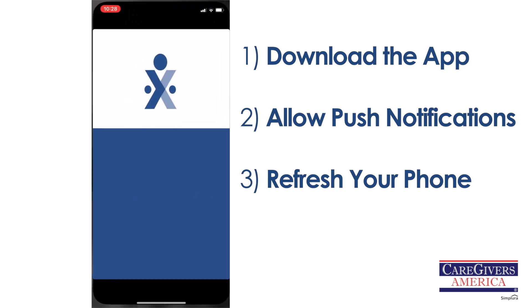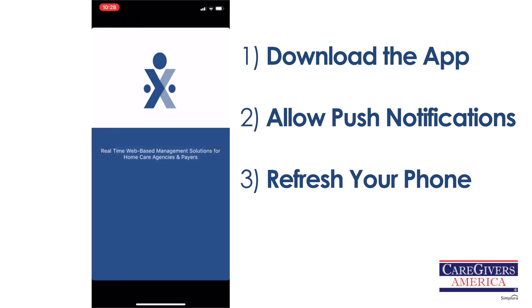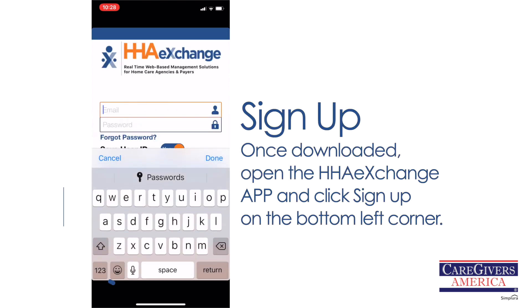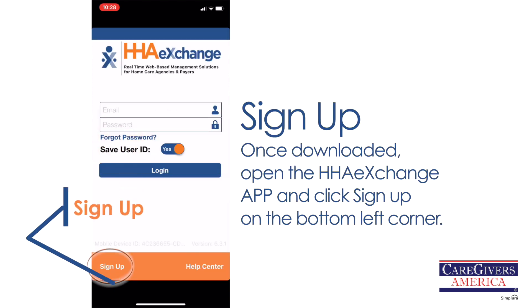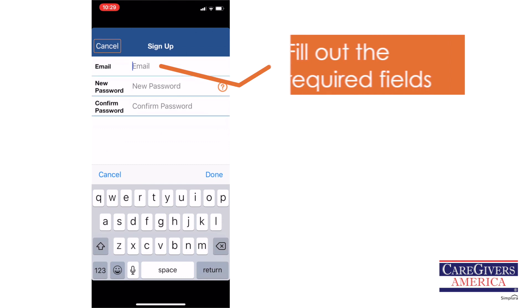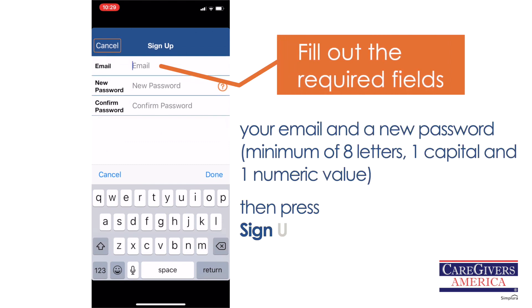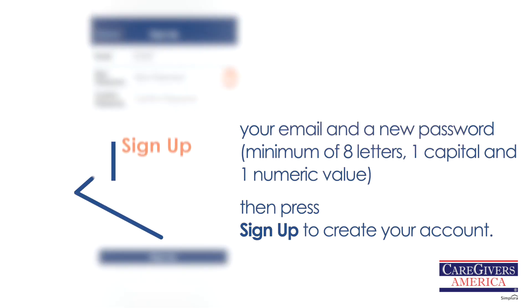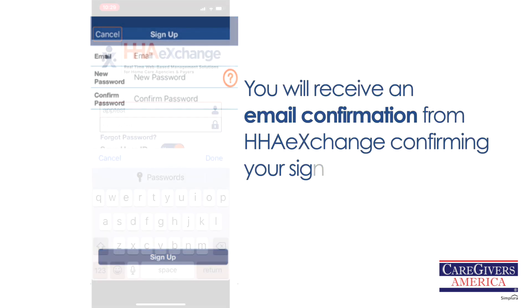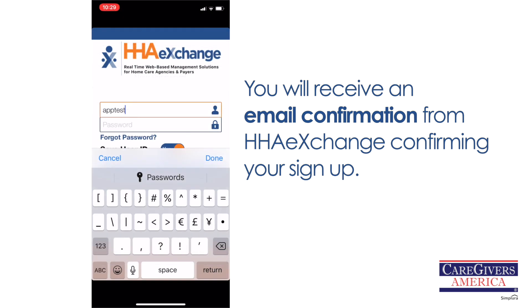Once downloaded, open the HHA Exchange app and click Sign Up on the bottom left corner. Fill out the required fields — enter your email and password, then press Sign Up at the bottom. You will receive an email from HHA Exchange confirming your sign up.